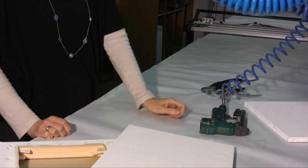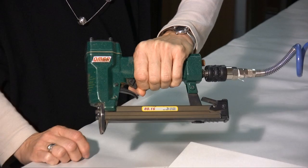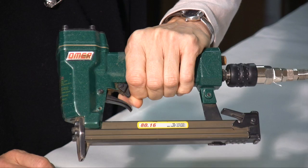For this example, instead of using a manual gun, I'll use a pneumatic air gun, to be precise, the Omer 80.16, which is provided by Rinaldin with a 335 code.